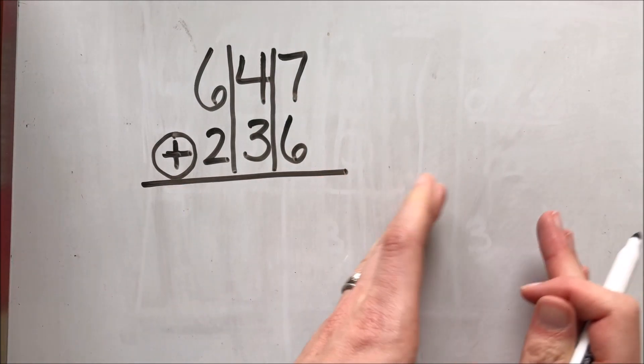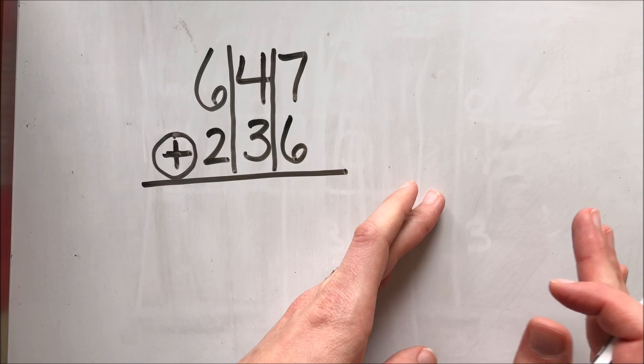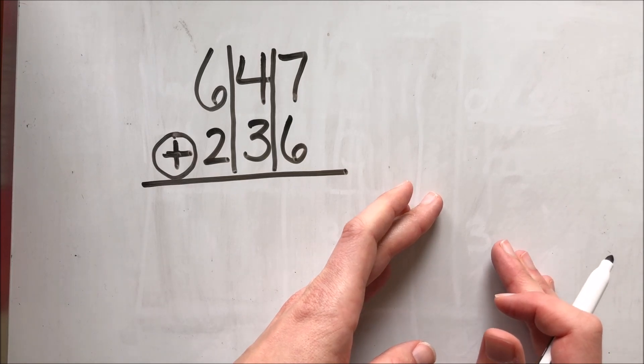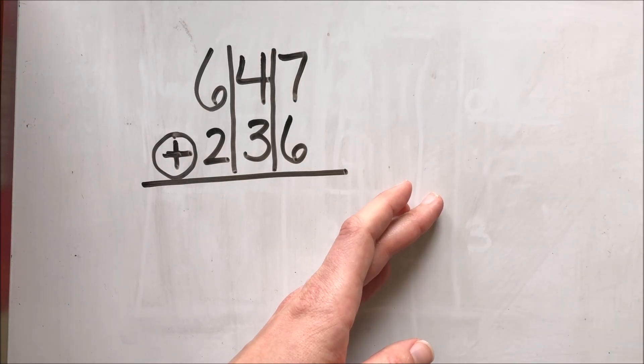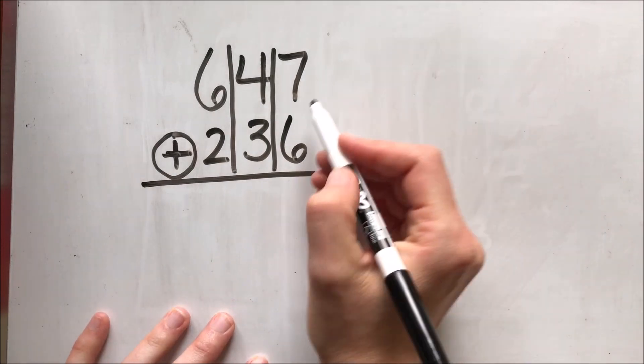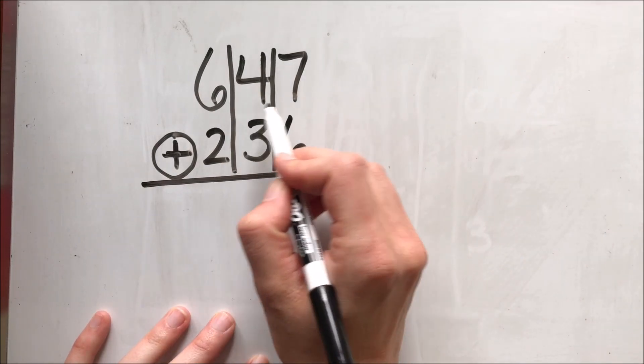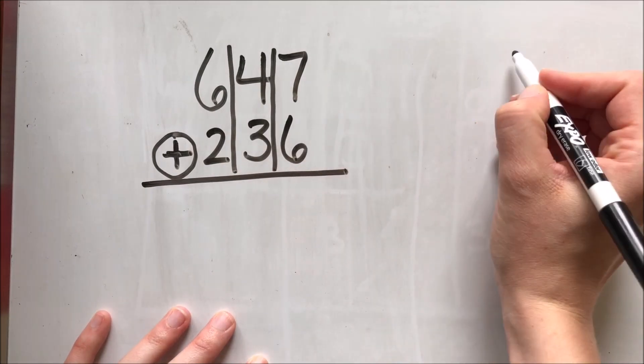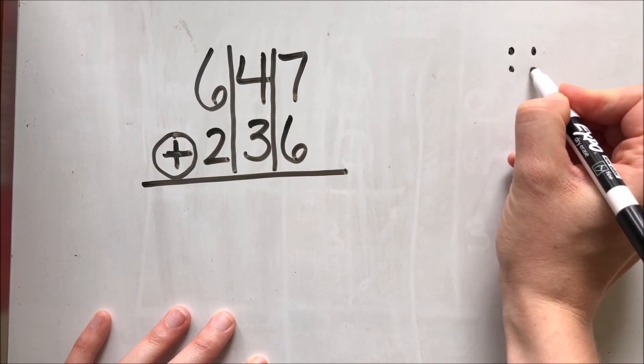Now I'm going to start today by drawing a picture over to the side. You don't have to draw a picture as you're adding but as we're kind of reviewing and you're trying to remember, a picture might be helpful. So starting with 647 I'm going to start over here with seven ones and I'm going to draw those as dots.